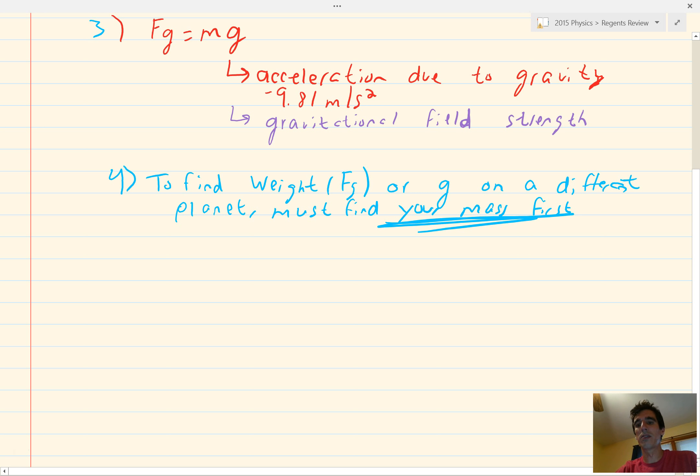So, if you're given your weight on Earth, let's say you weigh 1,000 newtons. So, Fg is 1,000 newtons. And, you want to find your mass, we'll start with Fg equals mg. Divide both sides by g. So, M is Fg over g.